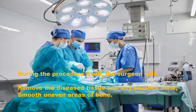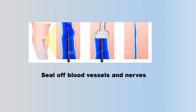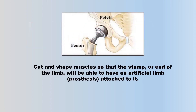During the procedure itself, the surgeon will remove the diseased tissue and any crushed bone, smooth uneven areas of bone, seal off blood vessels and nerves, and cut and shape muscles so that the stump — or end of the limb — will be able to have an artificial limb, or prosthesis, attached to it.